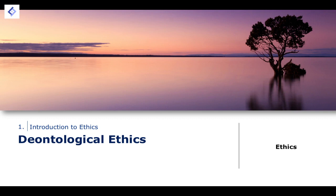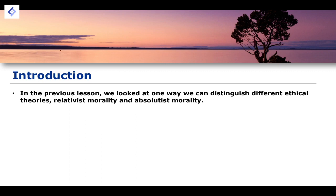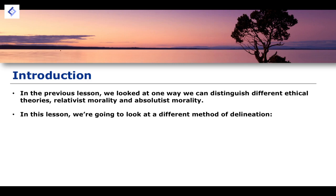It's important that we have an understanding of these more broadly before we start to unpack them and apply these ideas to specific systems of ethics that we will look at in future lessons. In the previous lesson, we distinguished between ethical theories relating to relativist morality and also to absolutist morality — the difference between something being absolutist in its moral framework versus something being relativist. But when it comes to normative ethics, we tend to make a more precise delineation when we talk about the distinction between deontological theories versus teleological theories.